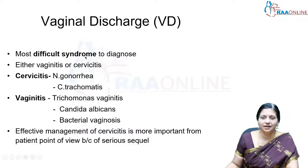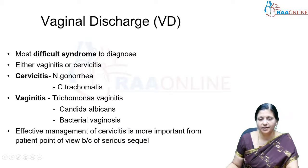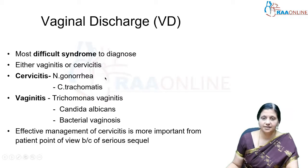Now vaginal discharge is a very difficult syndrome. It can be vaginitis or cervicitis. For cervicitis, the common causes are Neisseria gonorrhoeae and Chlamydia trachomatis; for vaginitis, the common causes include Trichomonas vaginalis, Candida albicans, and bacterial vaginosis. Effective management of cervicitis is more important from the patient's point of view because cervicitis can ascend and cause pelvic inflammatory disease.